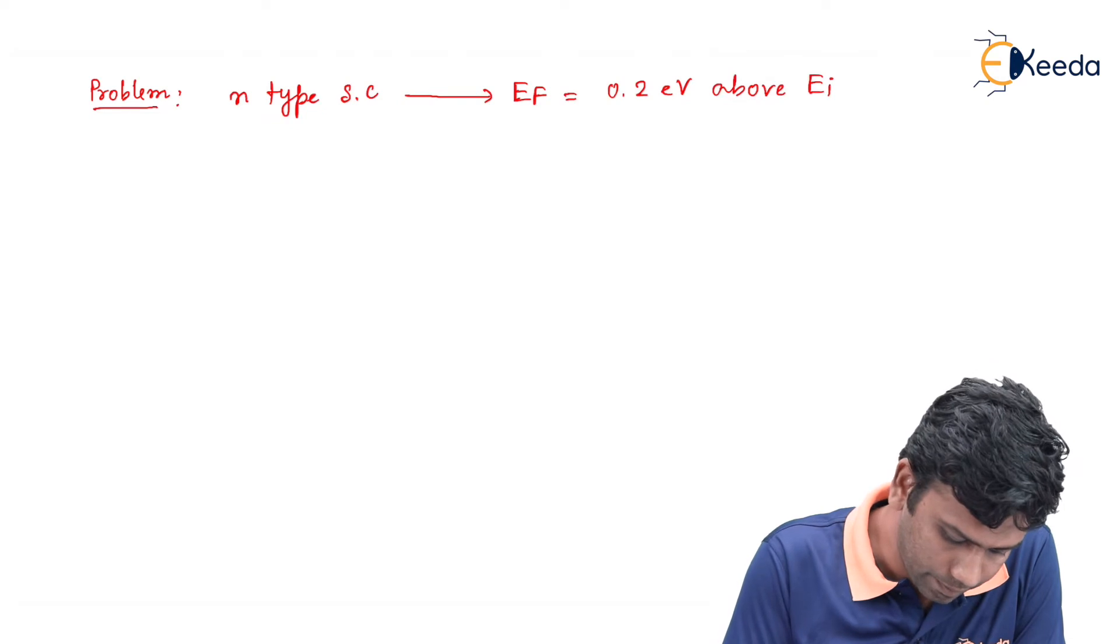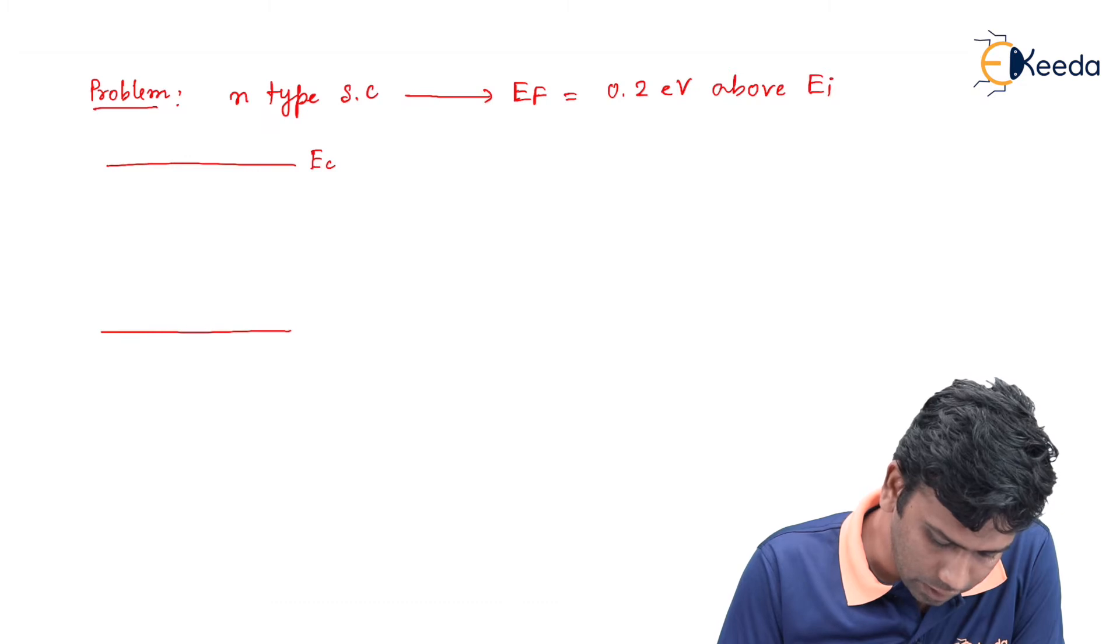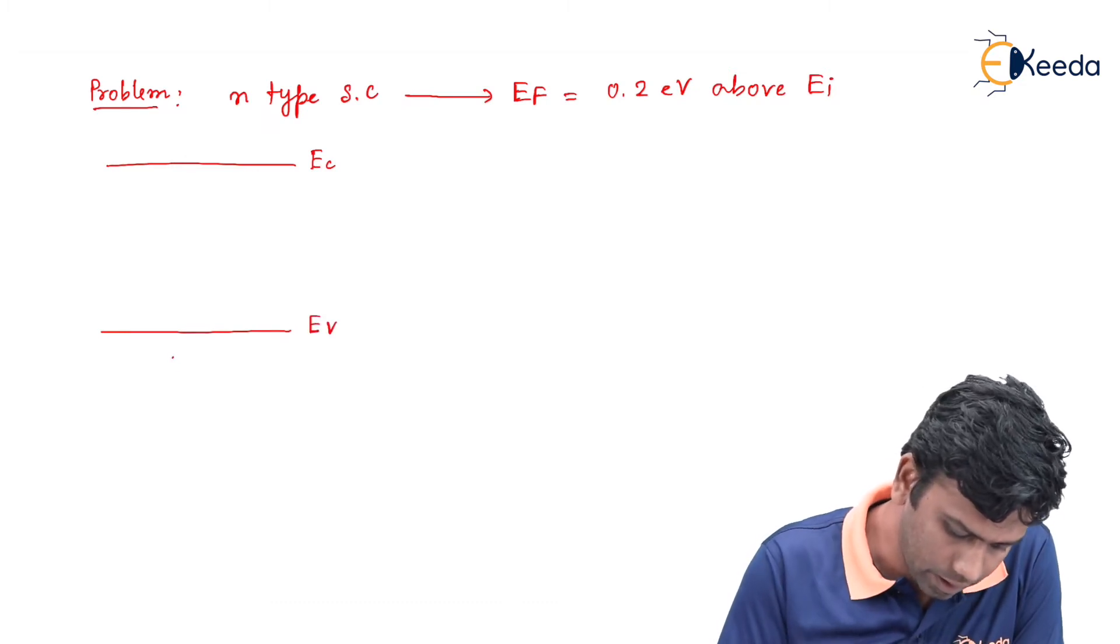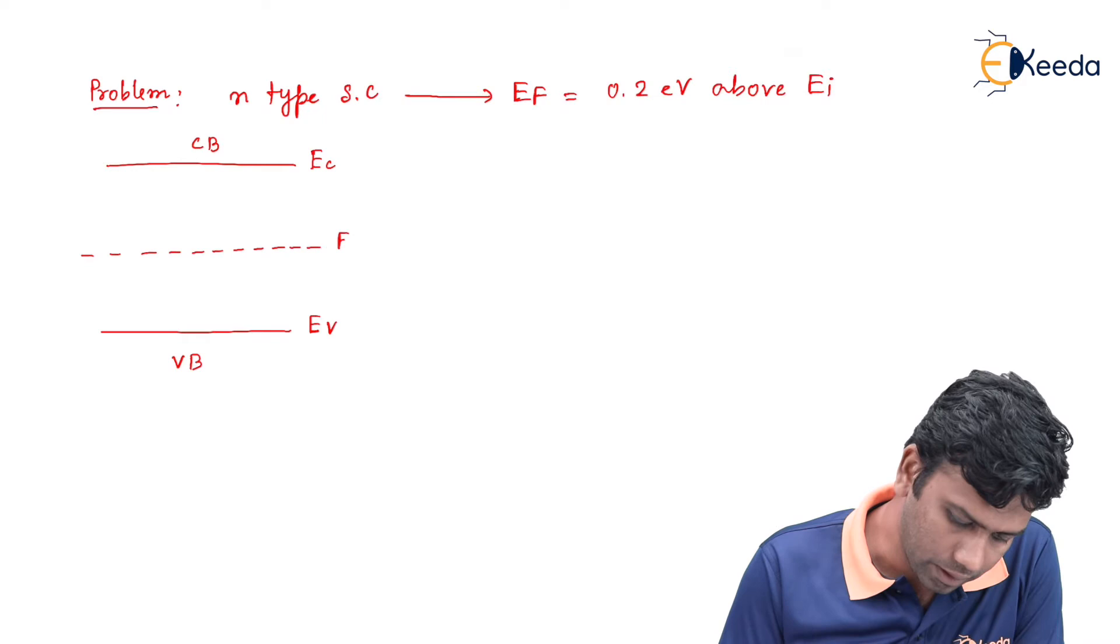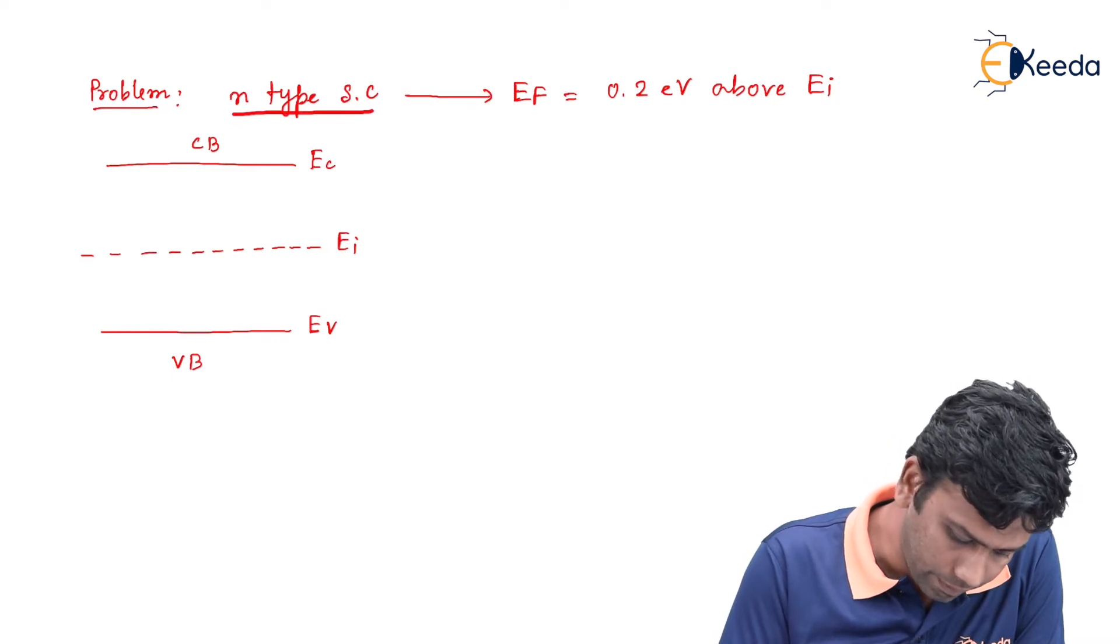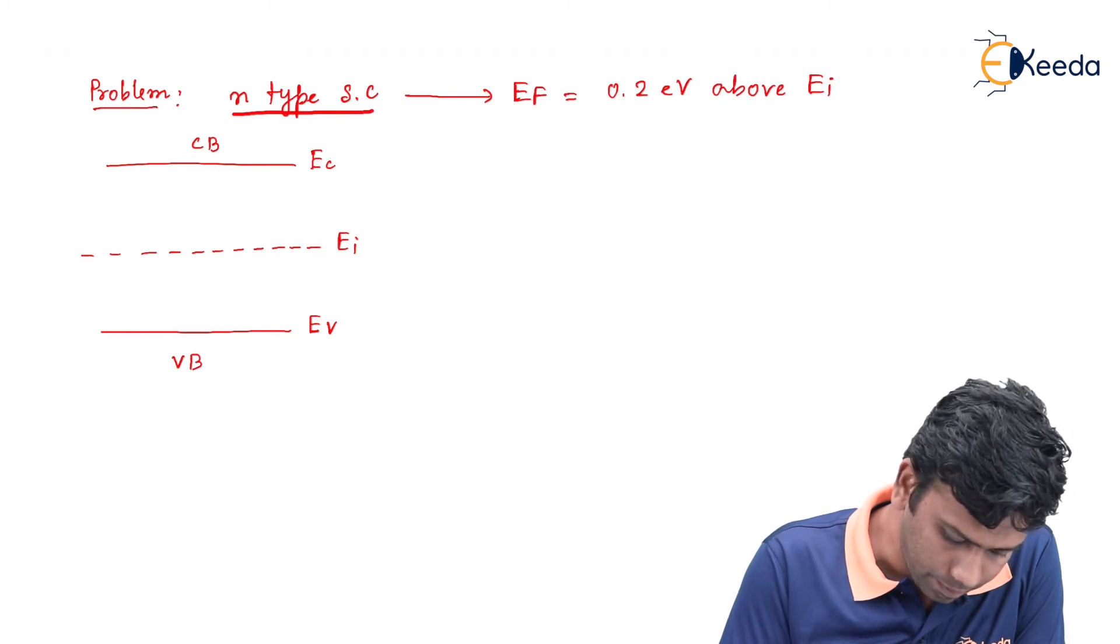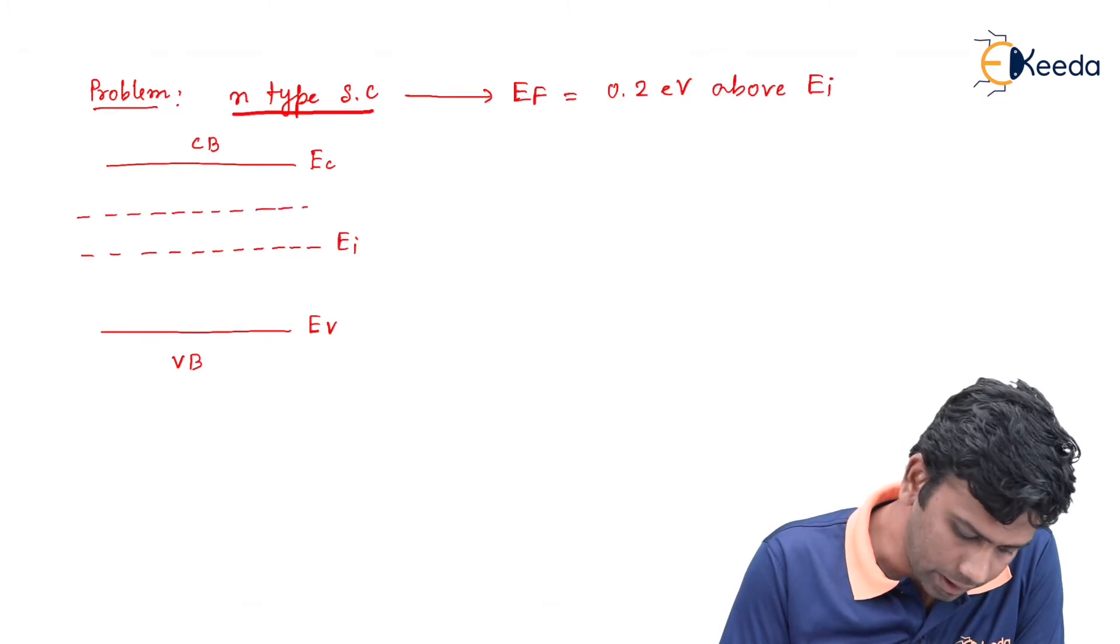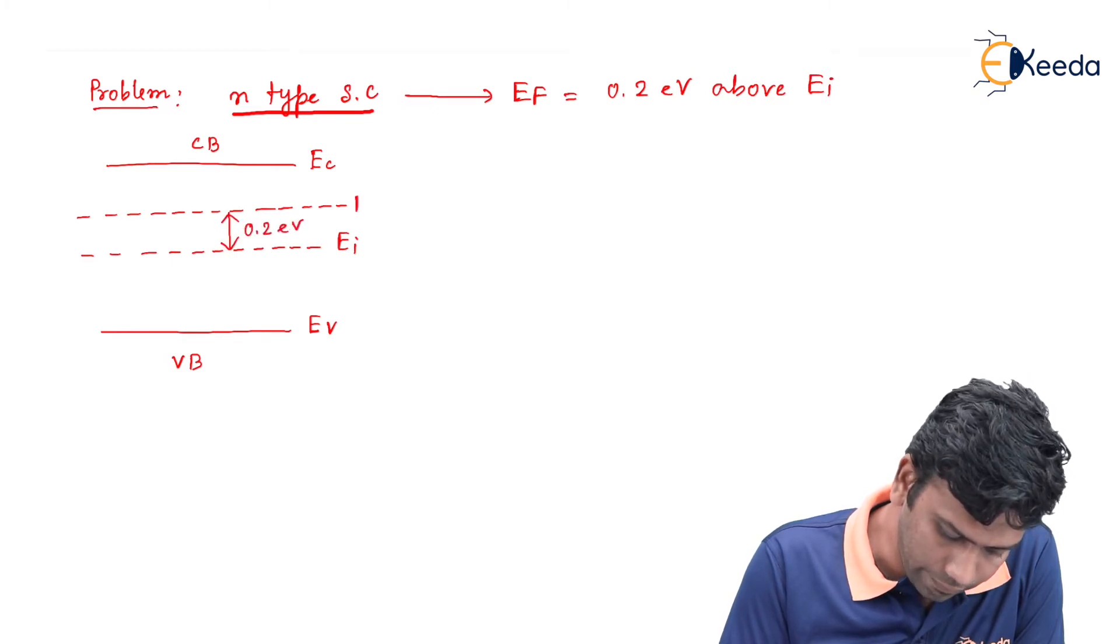That means, if this is the conduction band minimum energy EC and if this is the EV energy level, so this is the valence band, this is the conduction band, and if this is the intrinsic Fermi level EI, then the EF for this n-type semiconductor is given by 0.2 electron volt above the EI. This is the EF of the n-type.